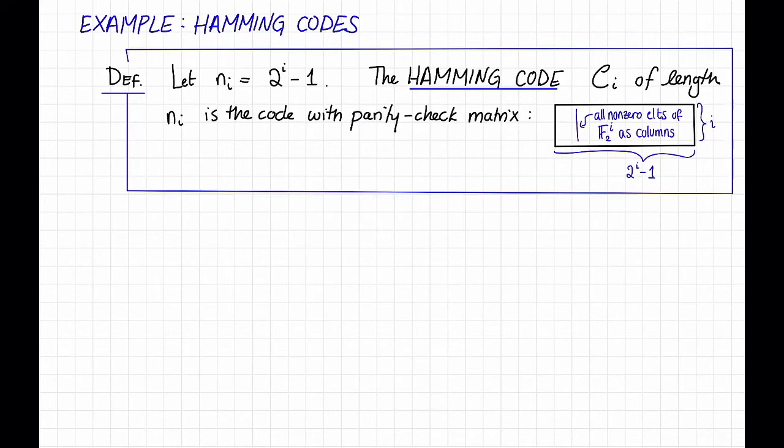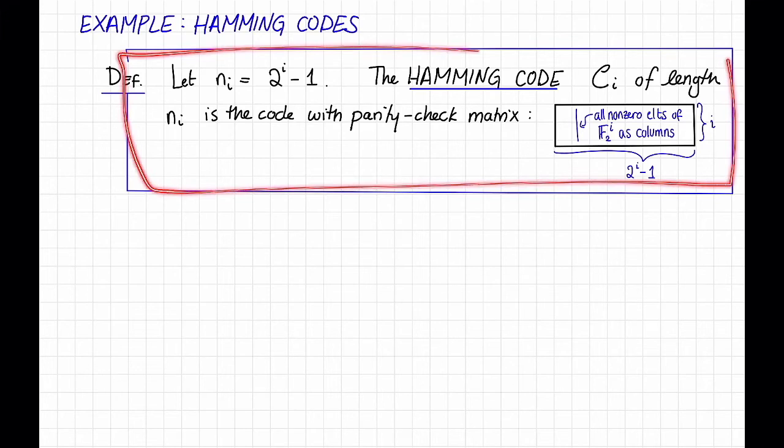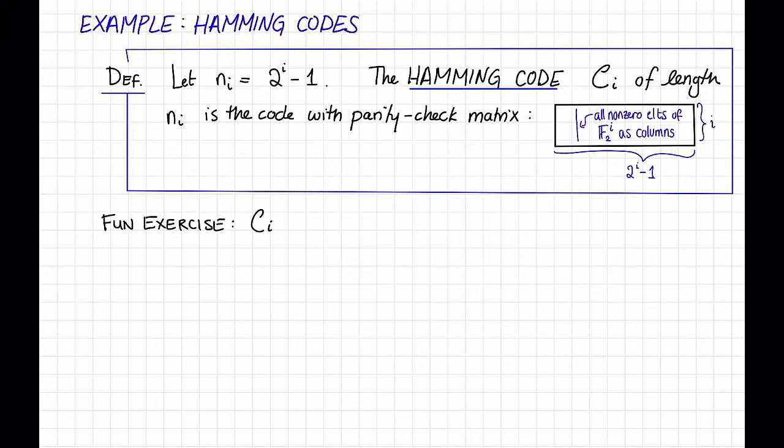Here's a familiar example of a family of codes. Let n_i be 2^i - 1. Then the Hamming code C_i of length n_i is the code with this parity check matrix. This is an i by 2^i - 1 matrix, and the columns of this matrix are all of the non-zero elements of F_2^i. Notice that there are 2^i - 1 of them, so we just stack them up as columns here. We've already seen the Hamming code with n_i equals 7 before in these videos, and you may have explored this family more generally on your homework. It is a fun exercise, again, which you may have done on your homework, to show that the i-th Hamming code C_i is a (2^i - 1, 2^i - i - 1, 3)_2 code.